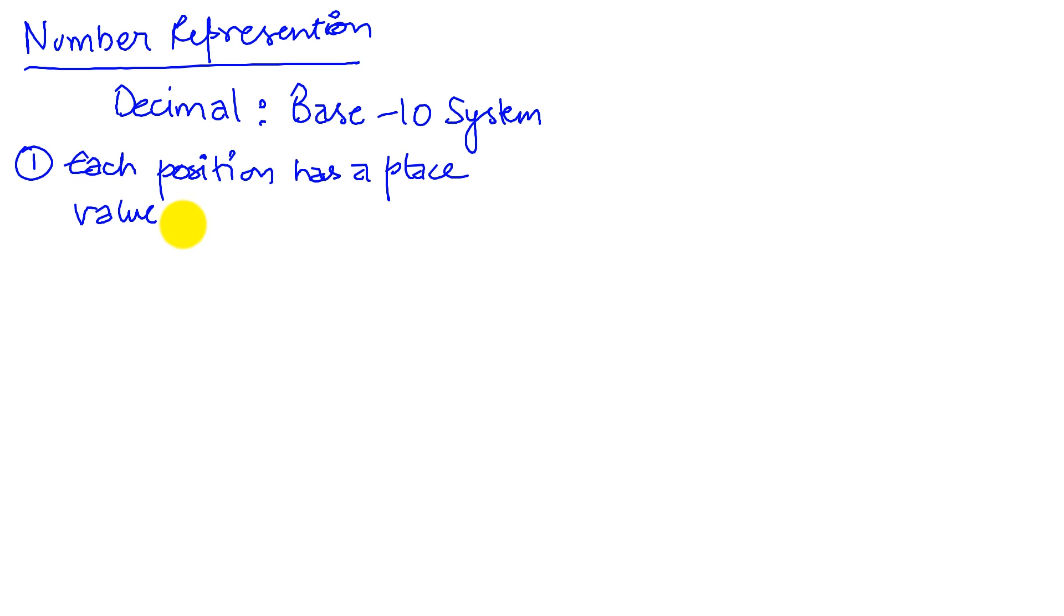And the value attributed to each place is a power of 10. The second characteristic of any number system is what are the valid values? The valid values are the coefficients.